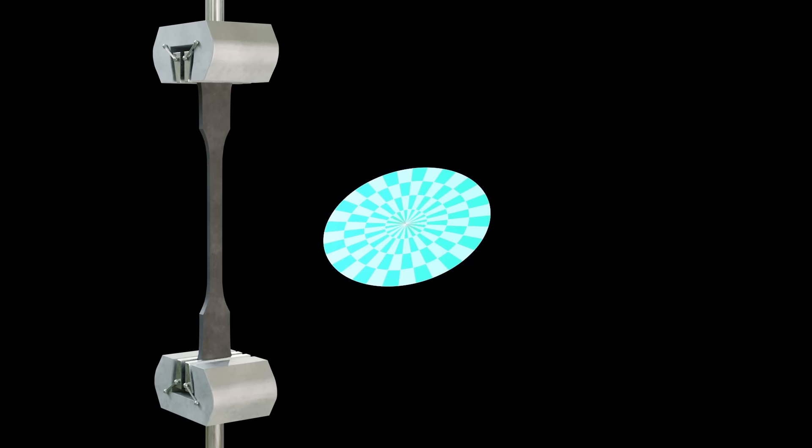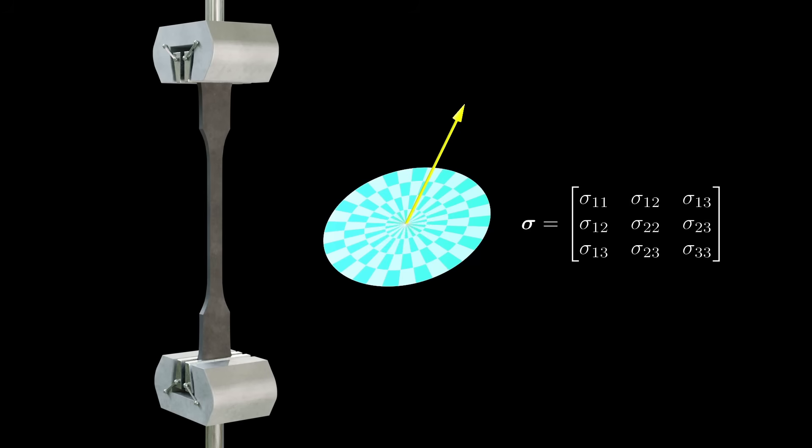If we deform an object and imagine cutting out a tiny plate inside it, the force acting on that plate is determined by a second-order tensor — the stress tensor. But force is a vector, so what does a second-order tensor have to do with it? And why are there different definitions of stress tensors at small and large deformations? That's exactly what this video is about.